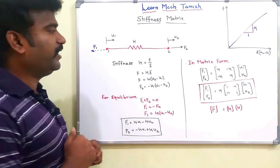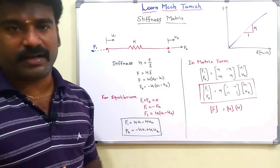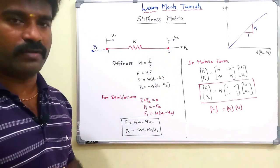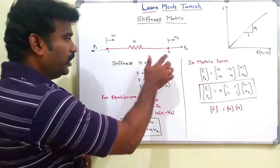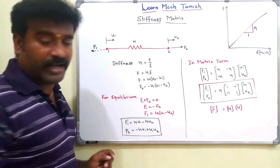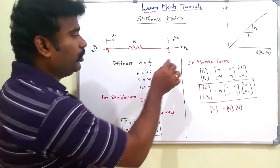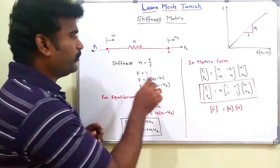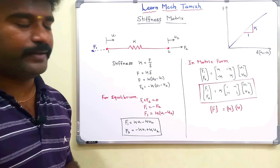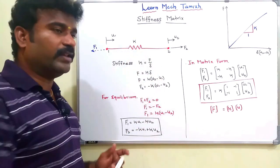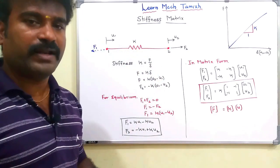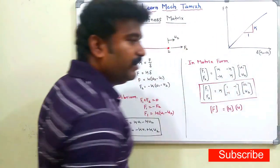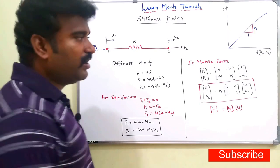Now, we have a spring element with a first point and second point — node 1 and node 2. Node 1 has displacement U1 and node 2 has displacement U2. The stiffness of this spring is K. The formula is force per unit deflection. We have a graph with the x-axis as displacement, U2 minus U1, or delta-L.